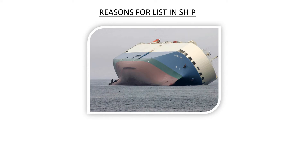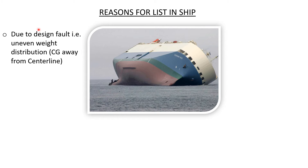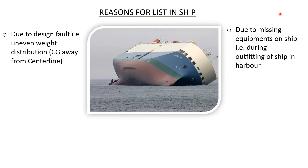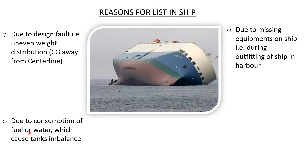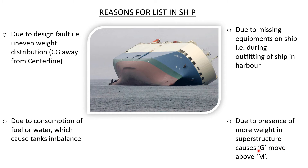Reasons for list in a ship: the first reason is due to design fault, like uneven weight distribution on the ship by the designer, where the CG is away from the center line either towards port or starboard side. The second reason is due to missing equipment on the ship during construction in the harbor, which can cause permanent list. Also, consumption of fuel or water can cause tank imbalance, resulting in a slight temporary list. The presence of weight in the superstructure causes G to move above M, which is a permanent type of list.